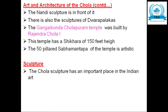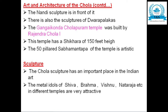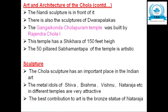The Chola sculpture has an important place in Indian art. The metal idols of Shiva, Brahma, Vishnu, Nataraja, and others in different temples are very attractive. The best contribution to Chola art is the bronze statue of Nataraja. These were the important points related to Chola art, architecture, and sculpture.